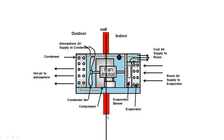To avoid all three disadvantages, the window air conditioning system is divided into two parts — the outdoor unit and the indoor unit. After dividing into two units, it requires two fans and two separate motors for the split air conditioning system, which is why it consumes more power.